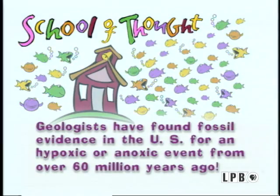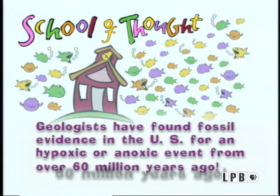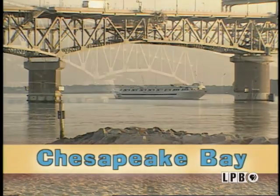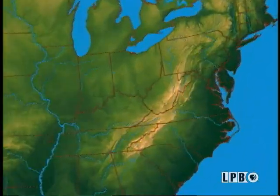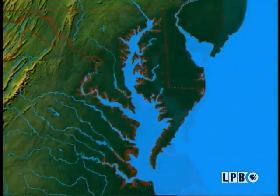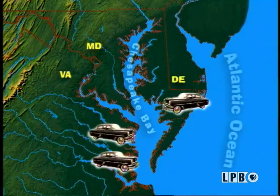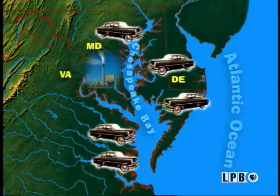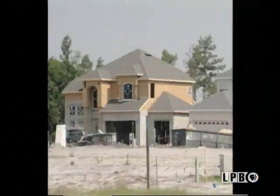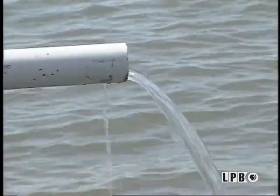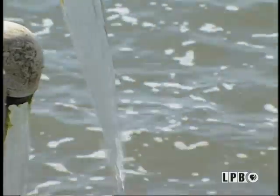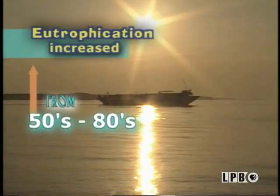Geologists have found fossil evidence in the U.S. for a hypoxic, maybe even anoxic event from more than 60 million years ago. The Chesapeake Bay area could be considered a classic river-based hypoxia laboratory. In the 1950s, after World War II, this region flourished with lots of cars — nitrous oxide was added to the air from vehicle emissions. Factories dumped wastewater without stringent pollution limits. Building left lands cleared, creating a direct path for runoff water carrying fertilizer and other chemicals into the bay. Those factors, along with natural cycles, steadily increased eutrophication from the 50s to the 80s.